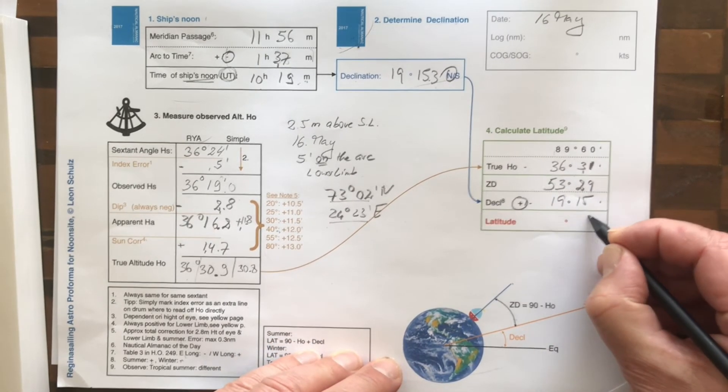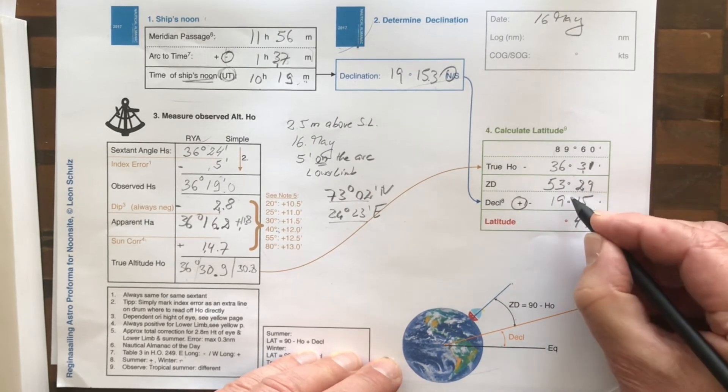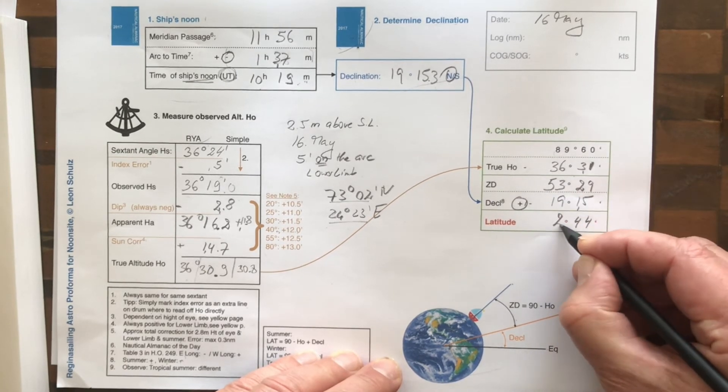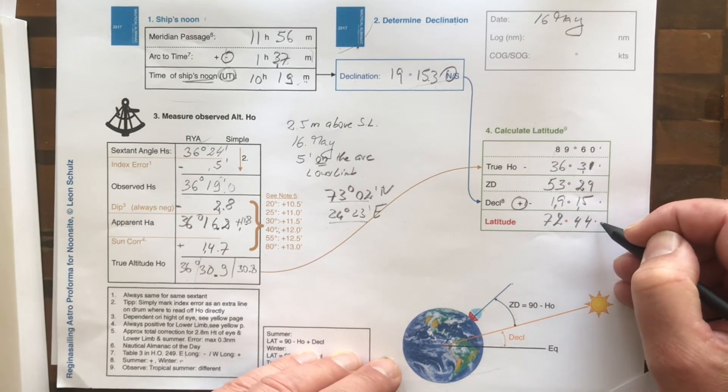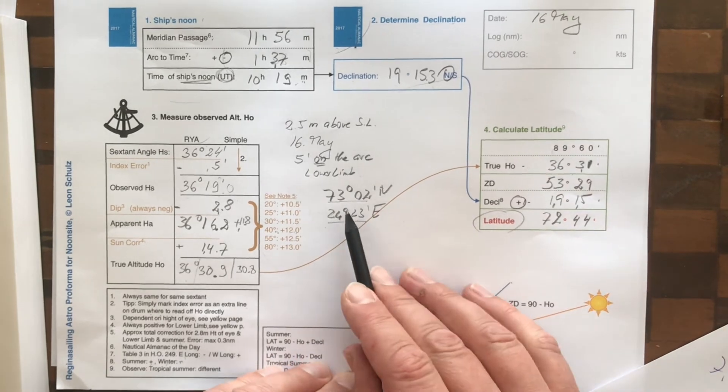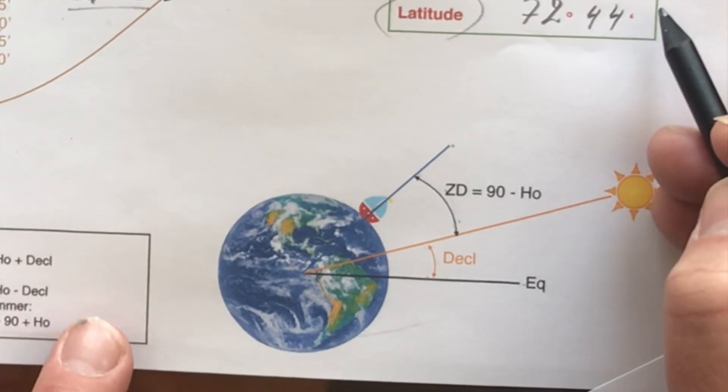So, 9 plus 5 is 14. And that's 4. And this makes 9 plus 3 is 12. 5, 6, 7. 72 degrees and 44 minutes. So that's our latitude. What did we think it was? Well, we thought it was 73 degrees 02 minutes.